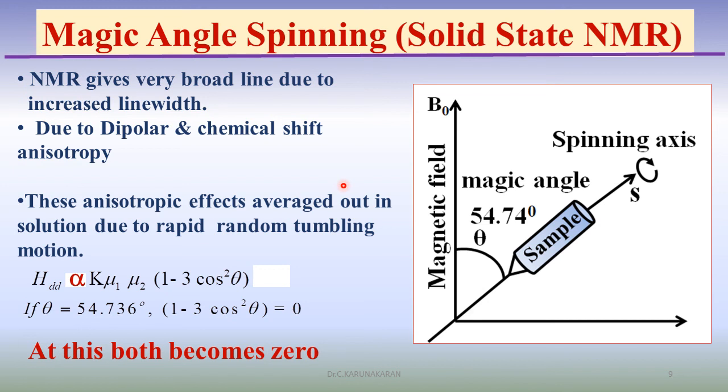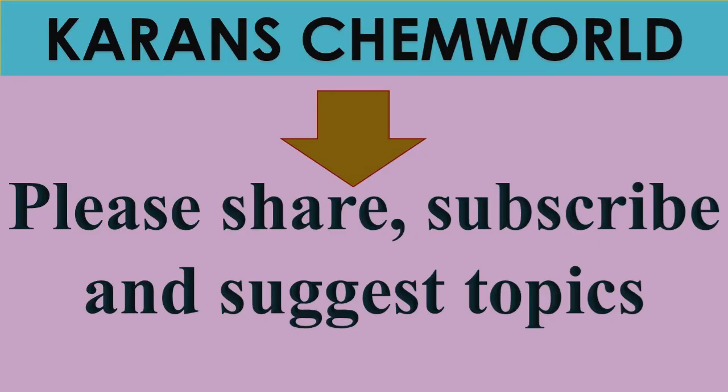They will give isotropic NMR spectrum due to rapid tumbling motion. However, in solid state, these effects are very significant. The sample is rotated about an axis that makes an angle with the external applied magnetic field, theta equal to 54.74 degrees. The dipolar chemical shift anisotropy is directly proportional to 1 minus 3 cos squared theta. When theta equals 54.74 degrees, these two effects become zero. Therefore, the lines are narrowed with lower line width. This is well resolved at this magic angle spinning of the sample.